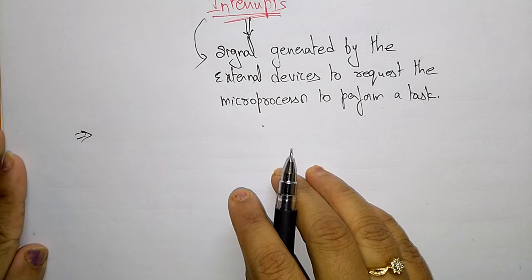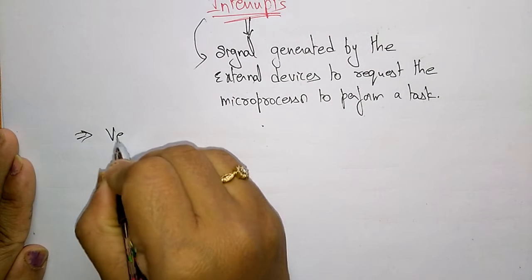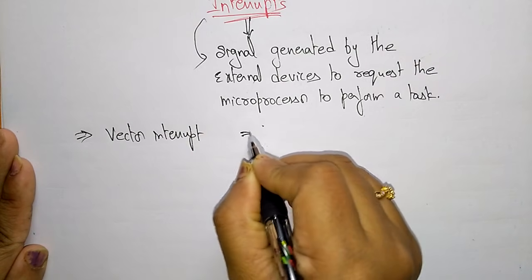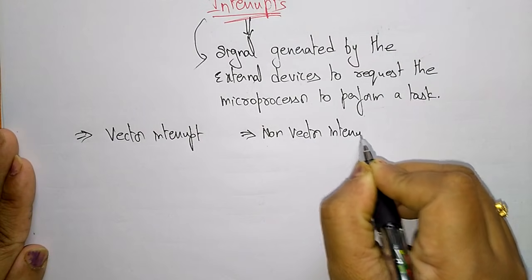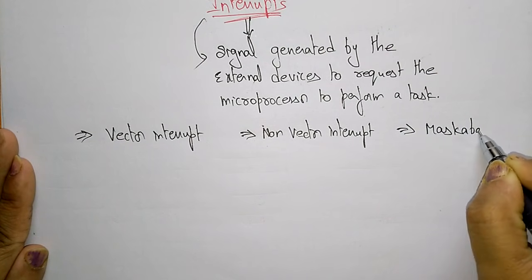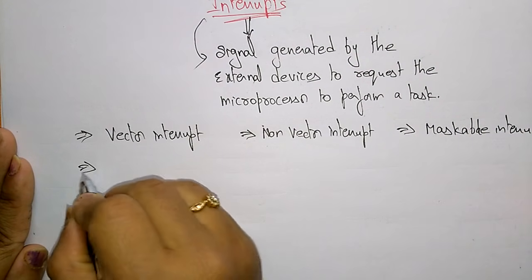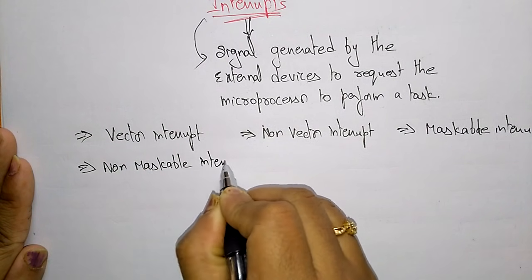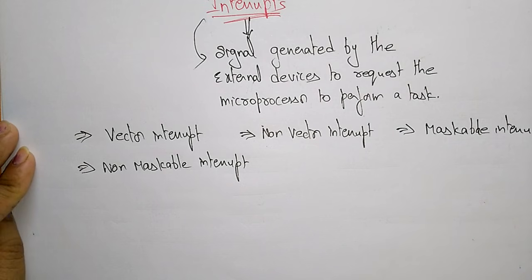The different interrupt types that the 8085 microprocessor accepts are: vector interrupt, non-vector interrupt, maskable interrupt, and non-maskable interrupt. These are the four different interrupts classified into groups based on their parameters.